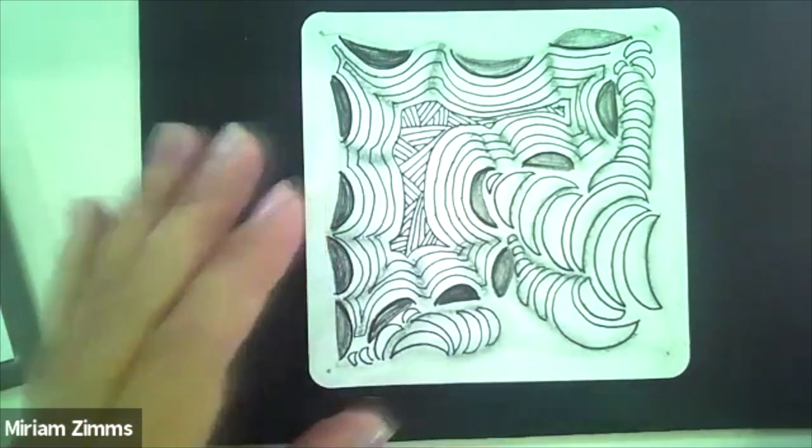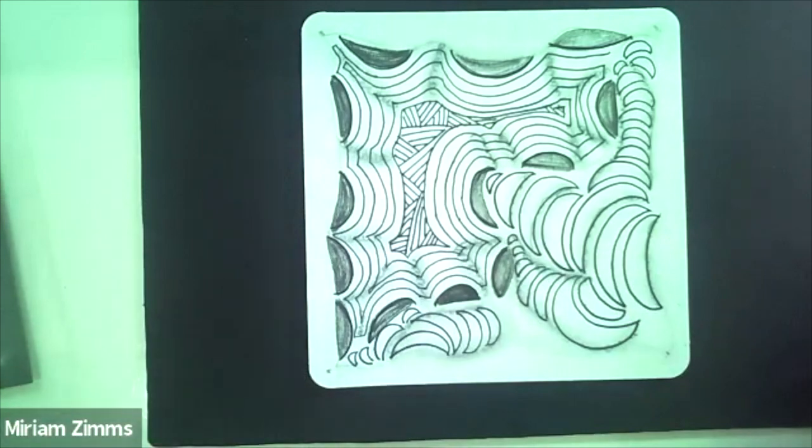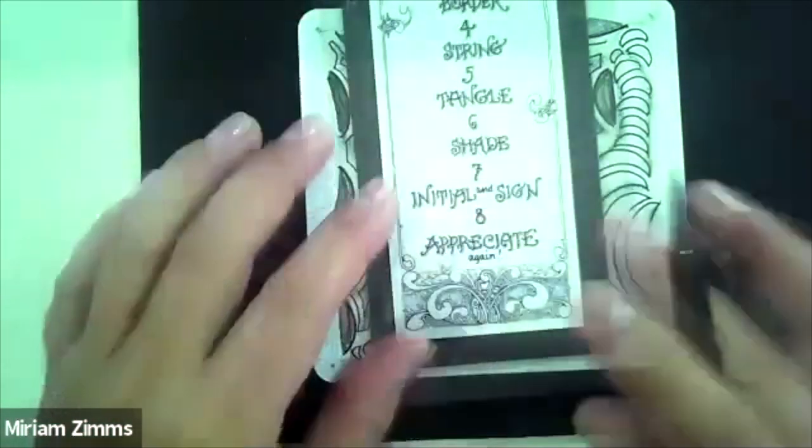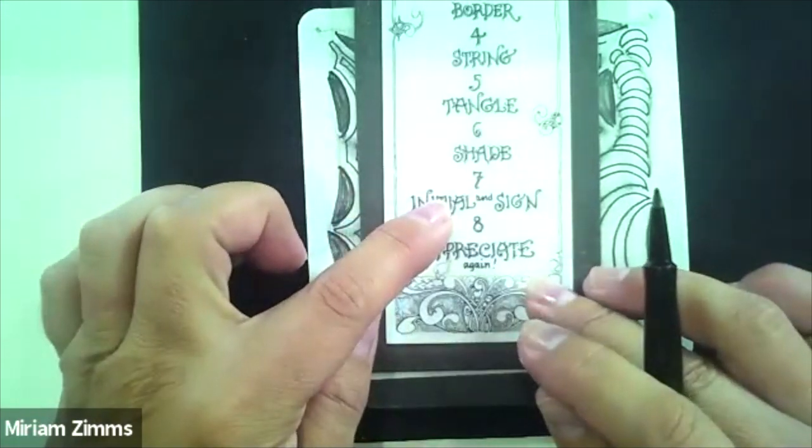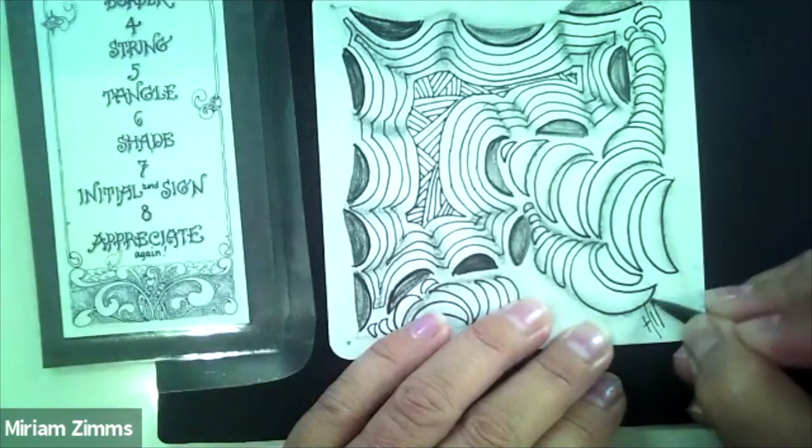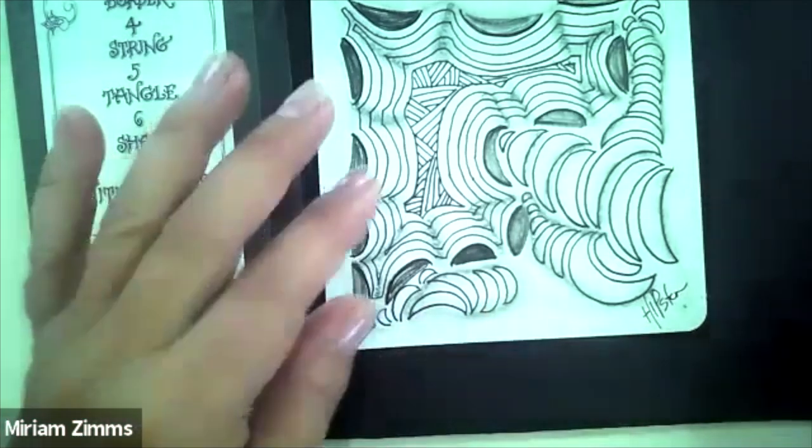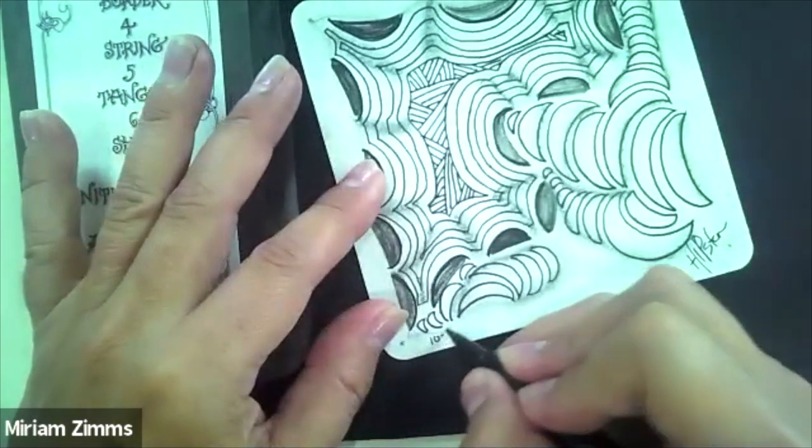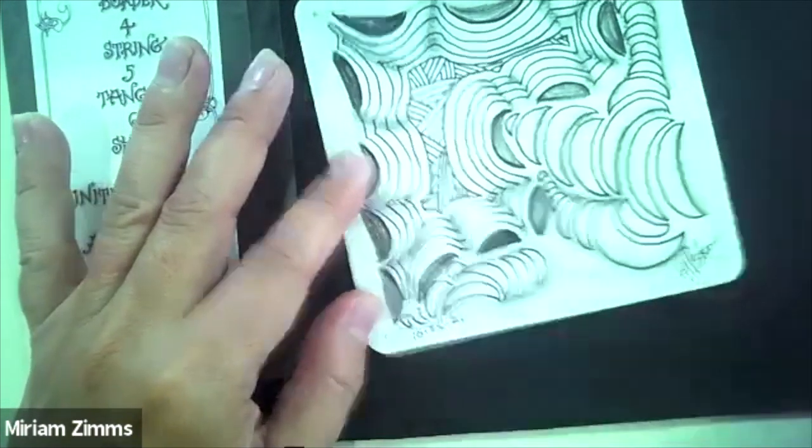So lastly, we want to initial and sign. I sign my art as Hipster. You don't have to date it. I like to put the date on the back of your art. I like to date mine just because I like to see what I did that day.